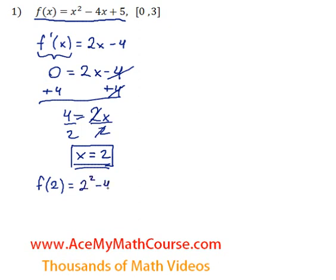So we have 2 squared minus 4 times 2 plus 5. 2 squared is 4, 4 times 2 is 8, plus 5, 4 minus 8, negative 4, plus 5, positive 1. So that is f of 2.